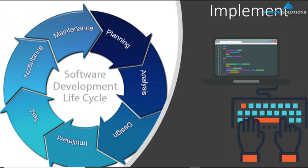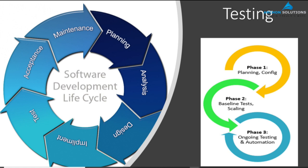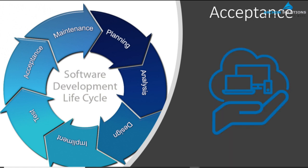Step number five is testing. The software goes through a testing team cycle where they start finding defects or bugs. These defects get assigned back to the development team, they fix them and give it back for retest. This cycle continues until the software is ready for deployment. Step number six is acceptance — once good quality software is ready, it is presented to the stakeholders for their approval.